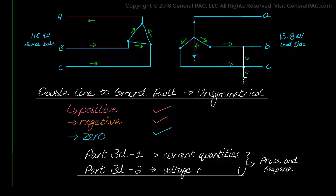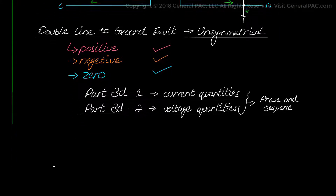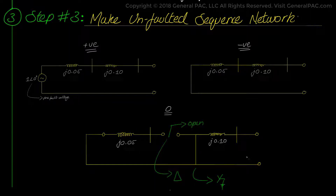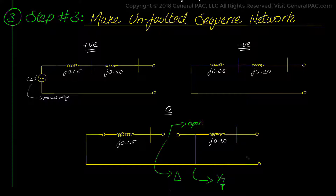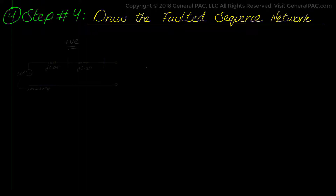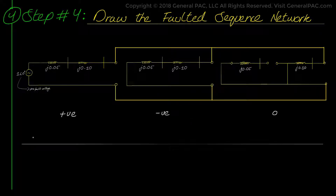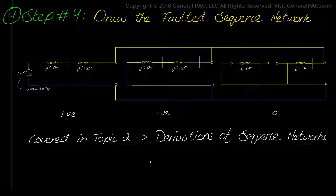In Part 3D-1 we will hand calculate all phase and sequence current quantities, and in Part 3D-2 we will calculate phase and sequence voltage quantities. Step 3 asks us to make unfaulted sequence networks from the per unit converted system in Step 1. There are the individual sequence network diagrams converted in Part 2C. In Step 4 we draw the faulted sequence network. For a double line to ground fault, we connect the positive, negative, and zero sequence networks in parallel.